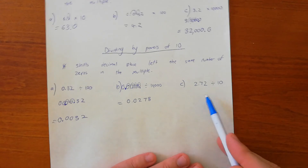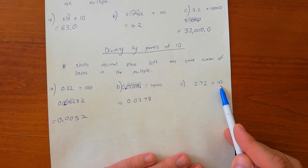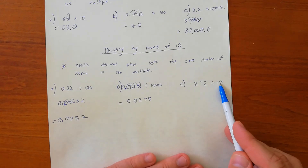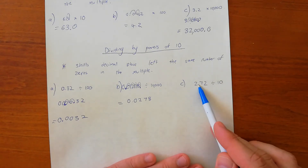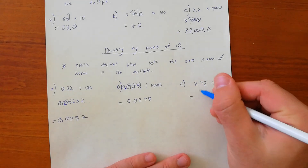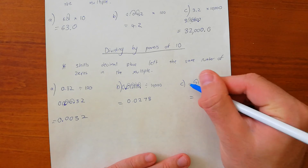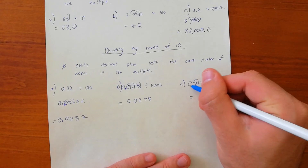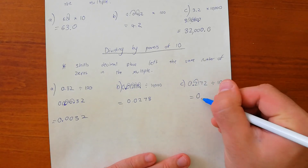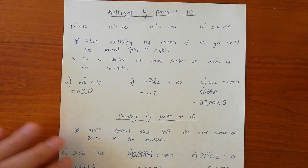This one's going to be nice and easy: 2.72 divided by 10. There's only one zero here, which means we're shifting the decimal place one spot to the left. So the answer is 0.272.